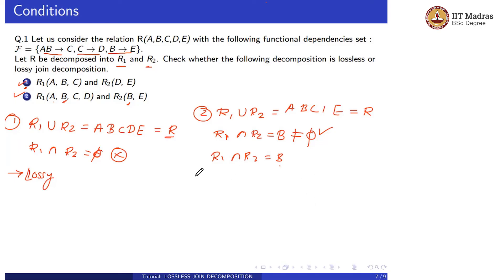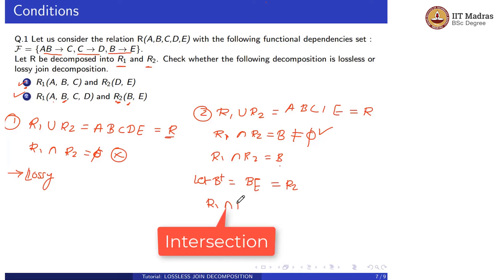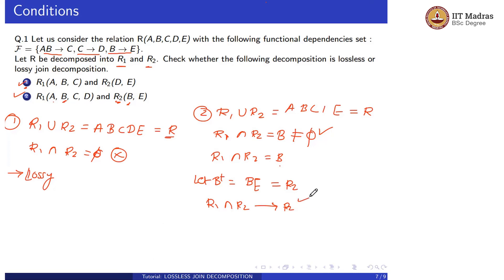Let us take the closure of B. From B → E, we get B⁺ = {B, E}, which equals R2. So our third condition is satisfied — R1 intersection R2 determines R2. All three conditions are satisfied, so we can say that decomposition R1 and R2 is lossless decomposition.